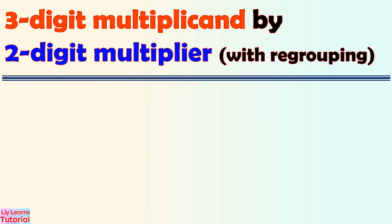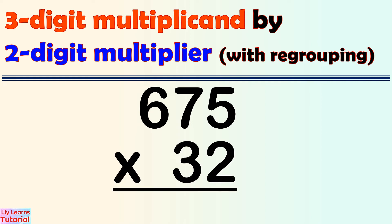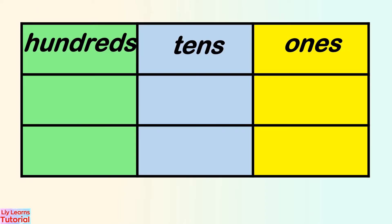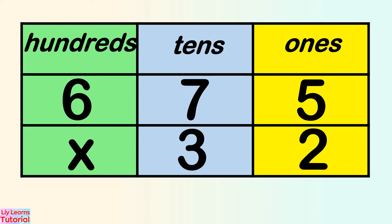Now we try to multiply a 3-digit multiplicand by a 2-digit multiplier. Let's solve 675 times 32. Remember, align the numbers to the correct place value: 1, 10, 100, and so on.